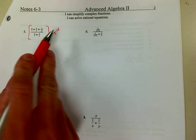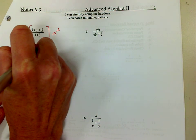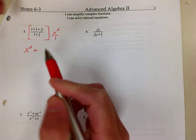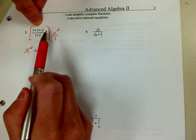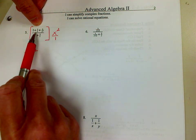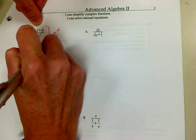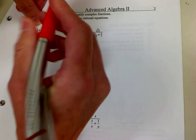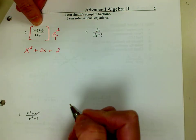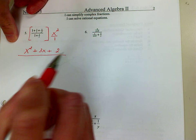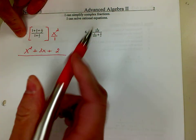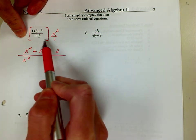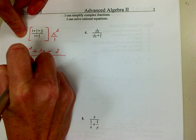So 1 times x squared is x squared. If I have 3 over 1 and multiply fractions straight across, I get 3x squared divided by x, which turns out to be 3x. This gives me 2x squared over x squared, which turns out to be 2. Moving to the denominator: 1 times x squared is x squared, and 2x squared divided by x is 2x.